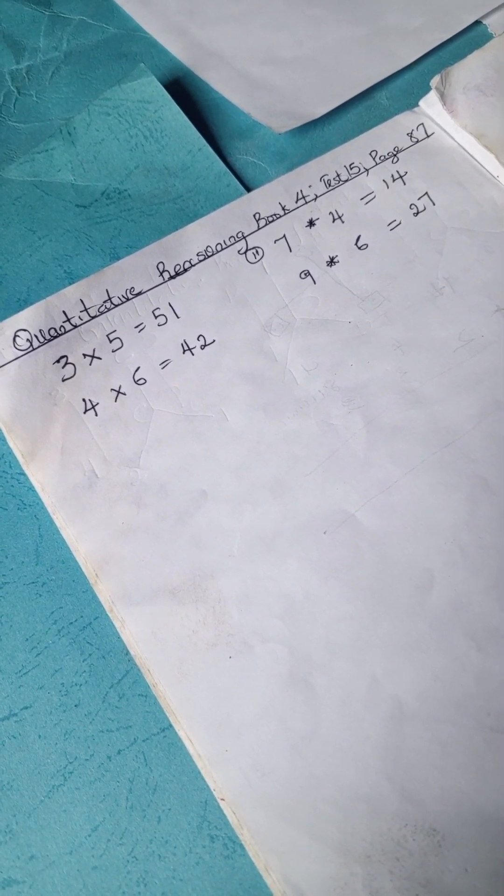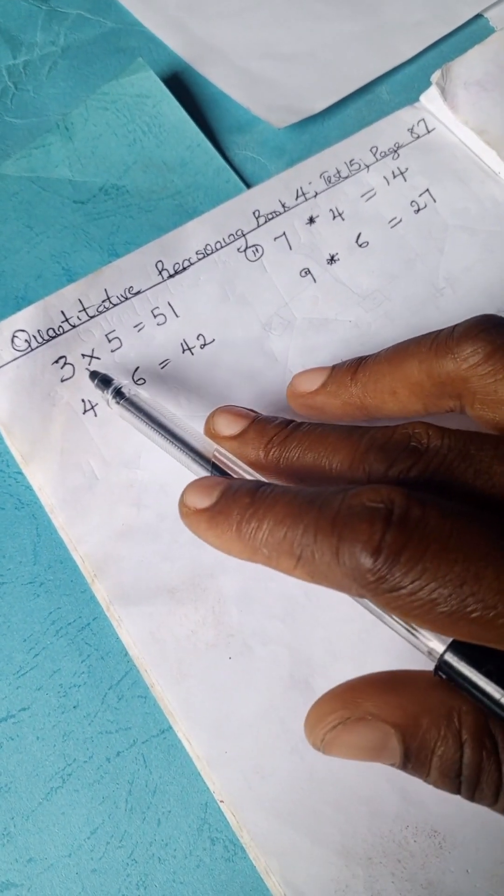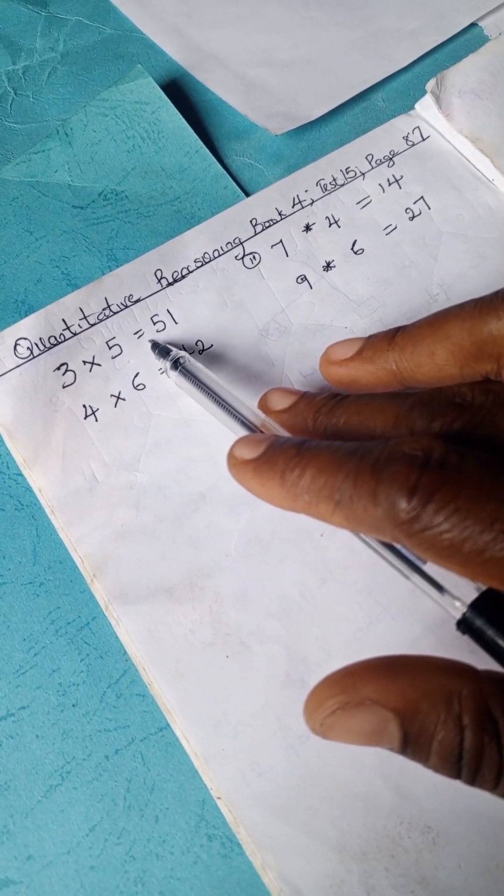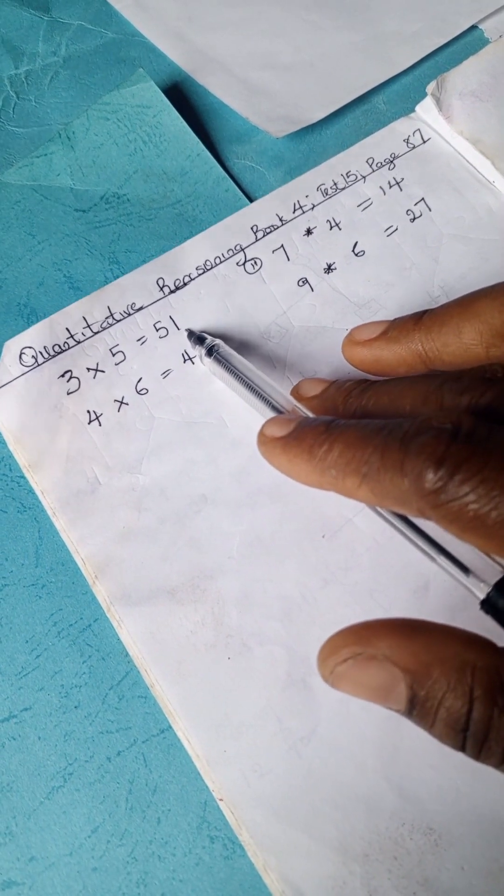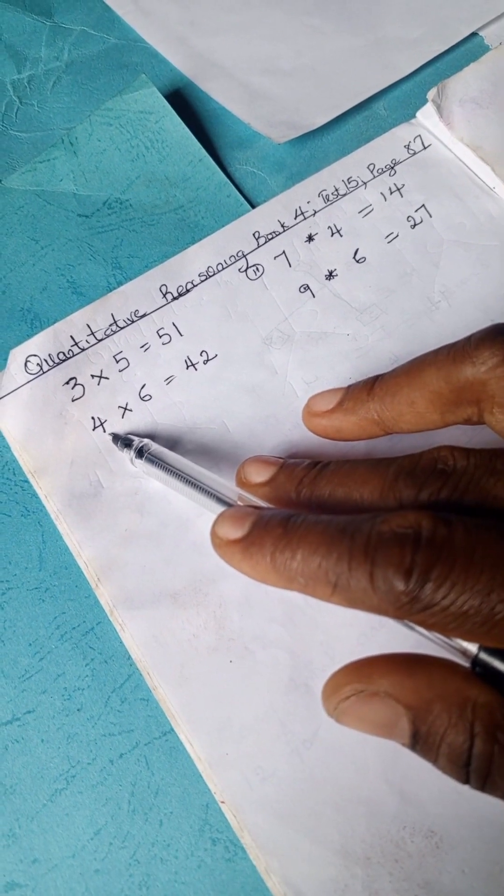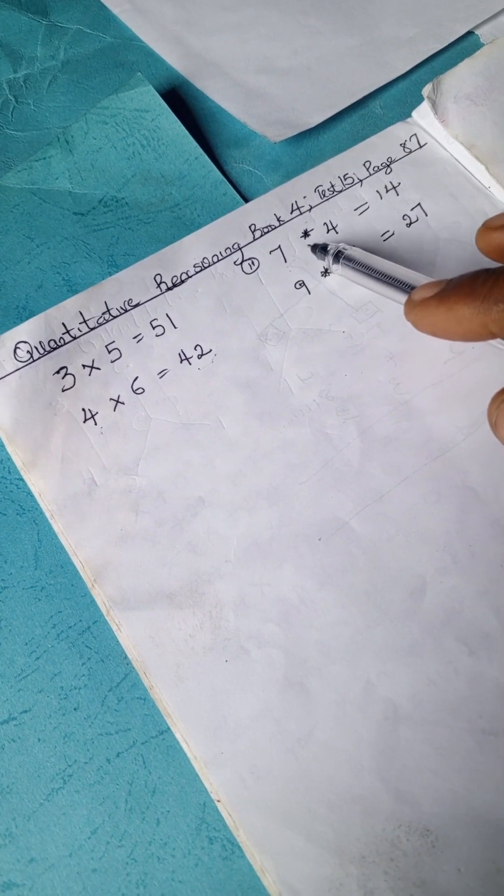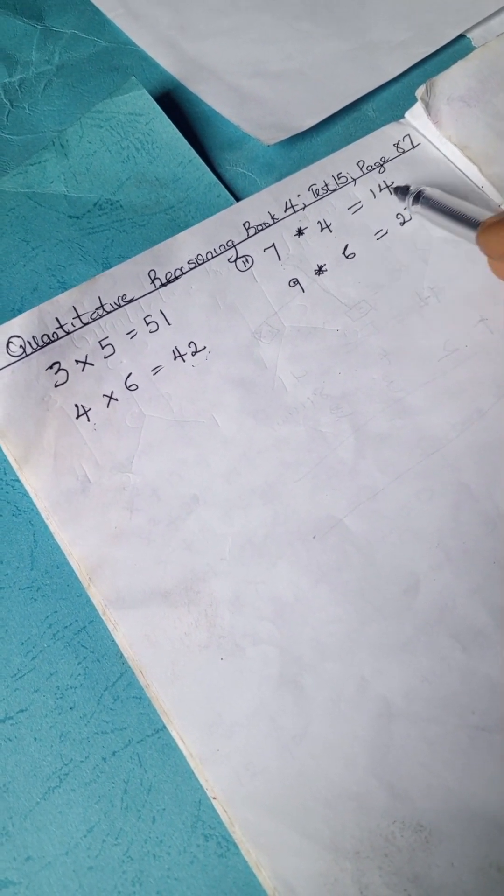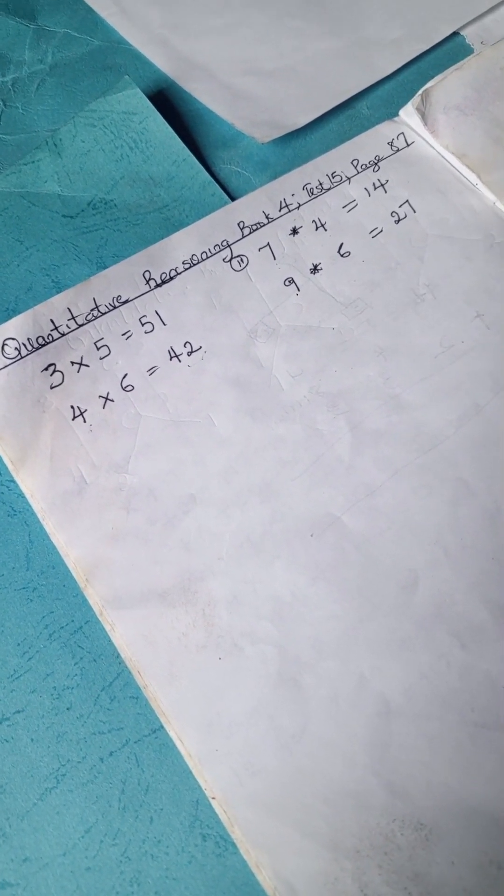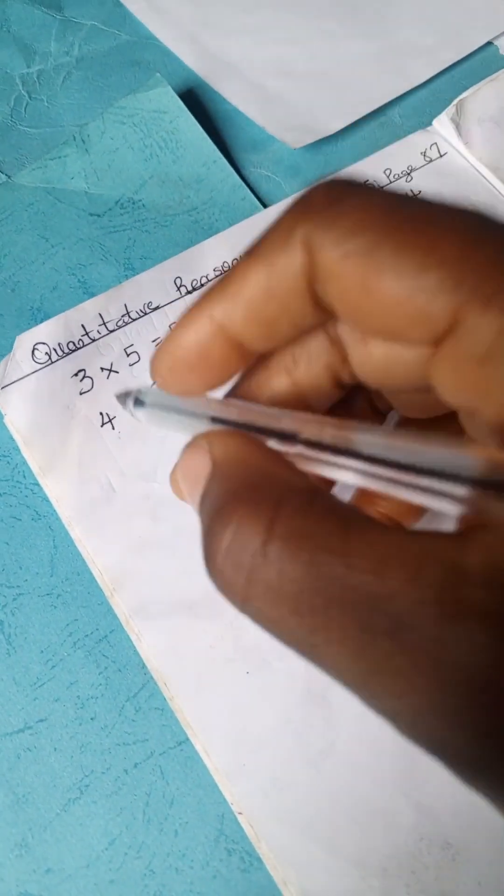So we have this problem: we have 3 times 5 and it's indicated equals 51, but actually 3 times 5 is not 51. We have 4 times 6 equals 42, we have 7 asterisk 4 equals 14, and 9 asterisk 6 equals 27. So we're going to unravel this problem now.